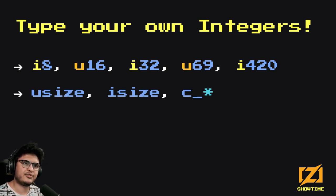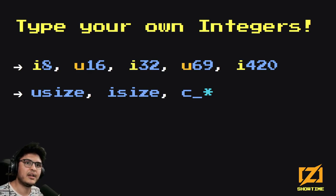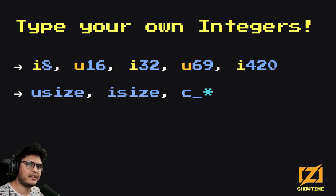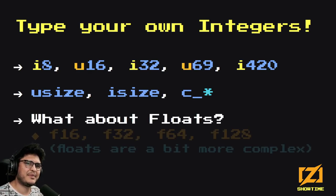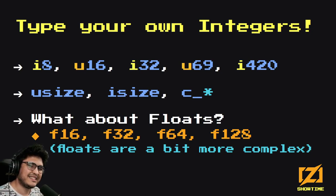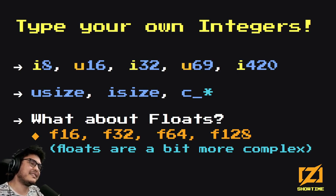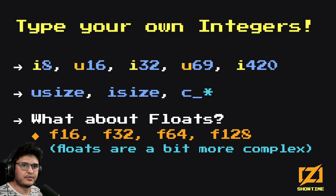There's also usize and isize, plus a bunch of c_something types for C interoperability. usize is the size of a pointer — for people who only program on common architectures, it's either 32-bit on 32-bit machines or 64-bit on 64-bit machines. isize is the same but signed. For floats, you have f16, f32, f64, f128. You could have an f33 in theory, but floats aren't as simple as integers — look those up yourself as homework. These are the float types built into the language, at least until today.